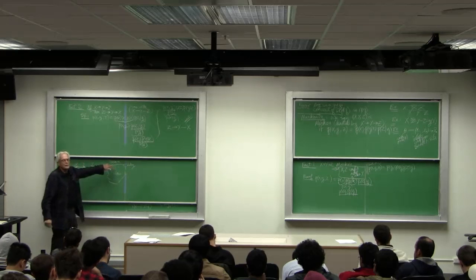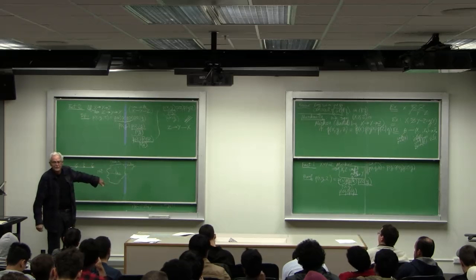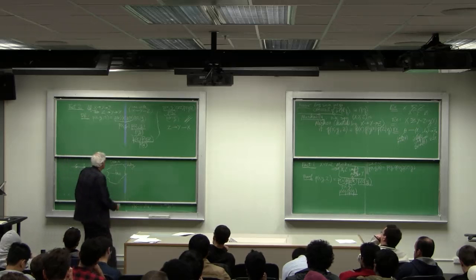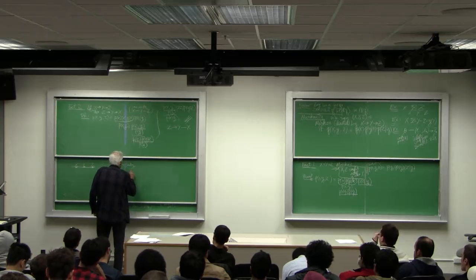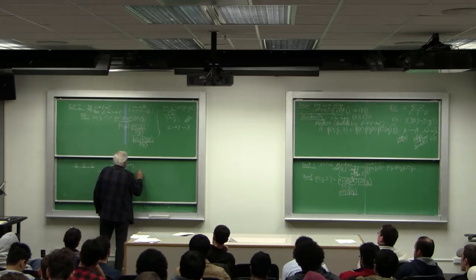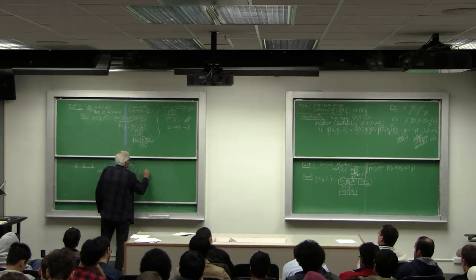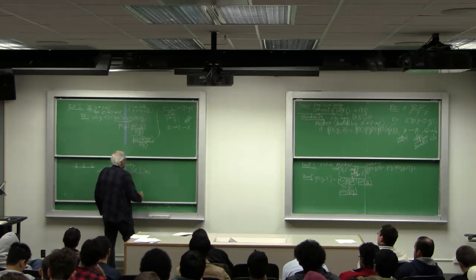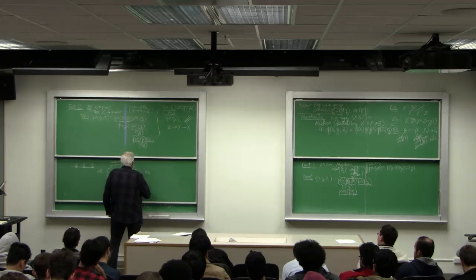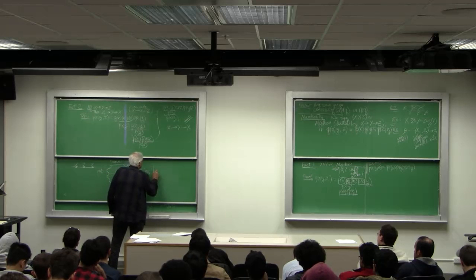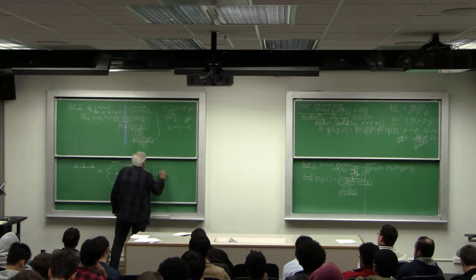And if we say this is outside and this is inside and this is boundary. So, let's say we have a two-dimensional Markov process if outside is conditionally independent of the inside given the boundary.